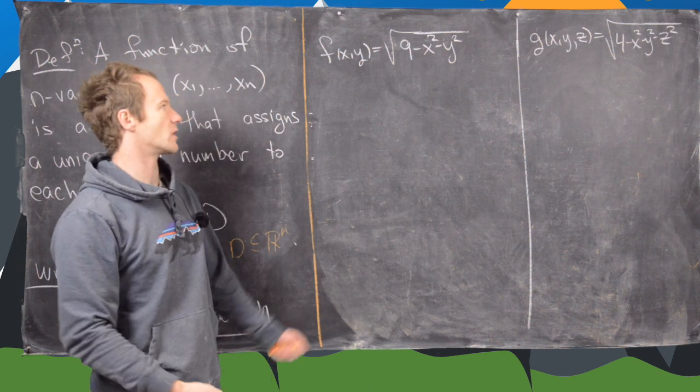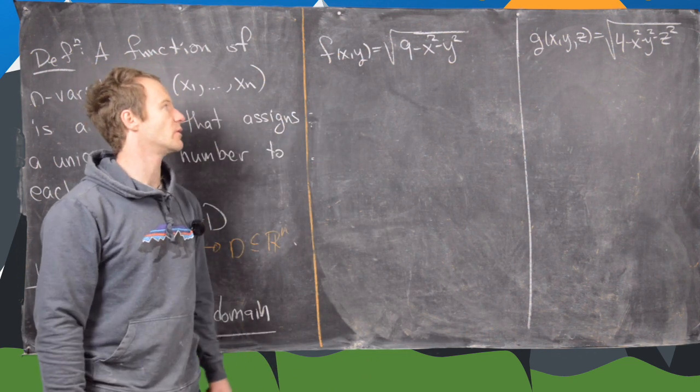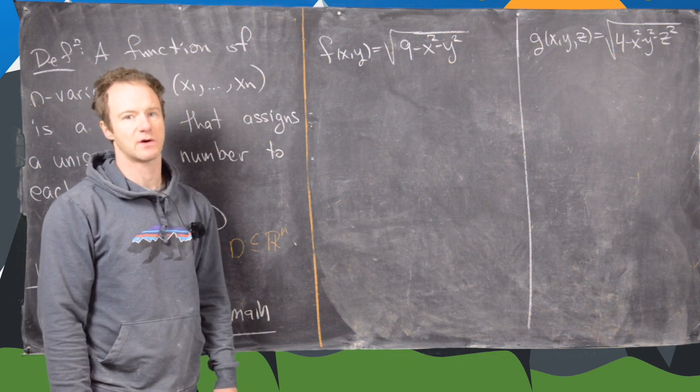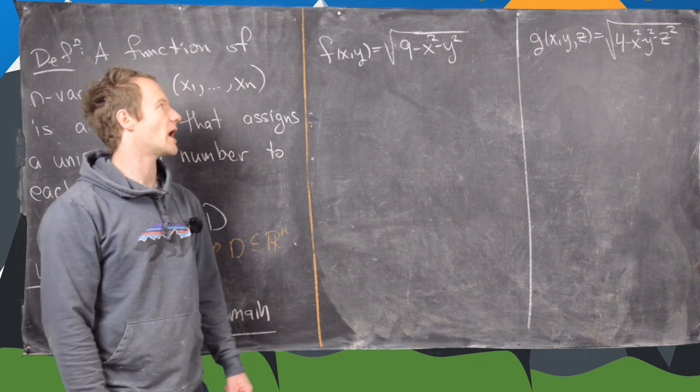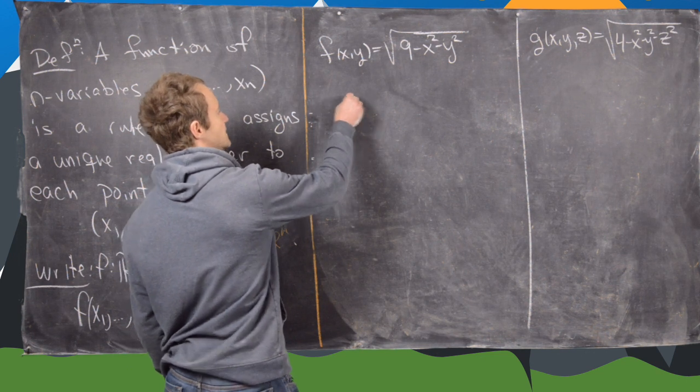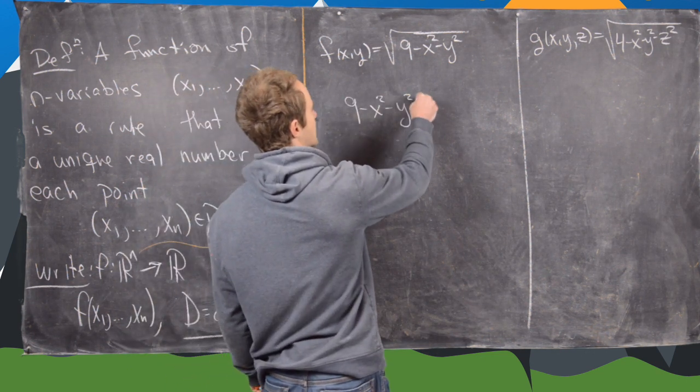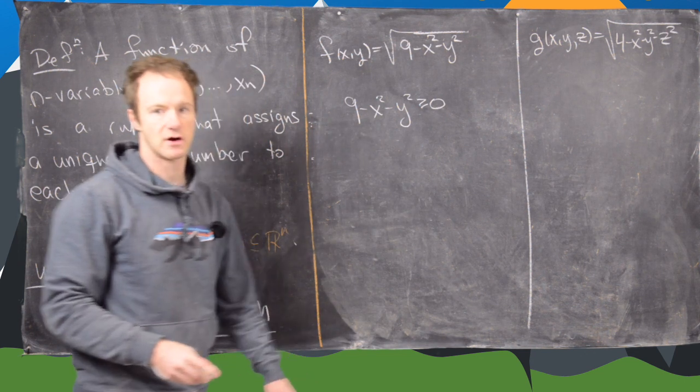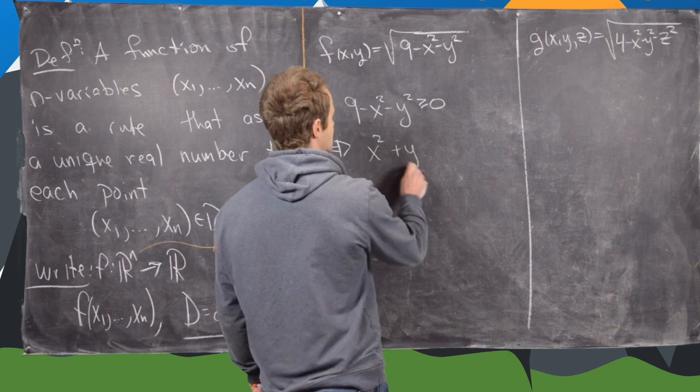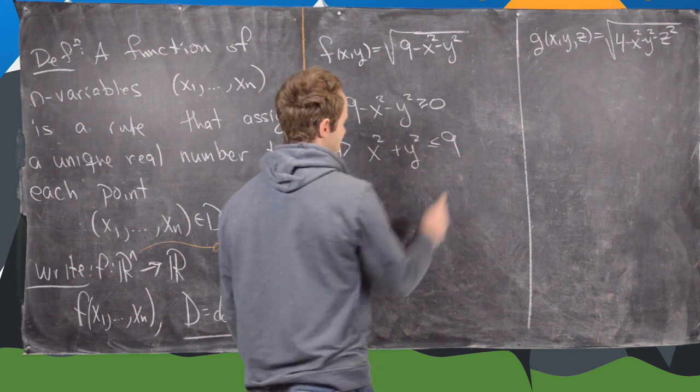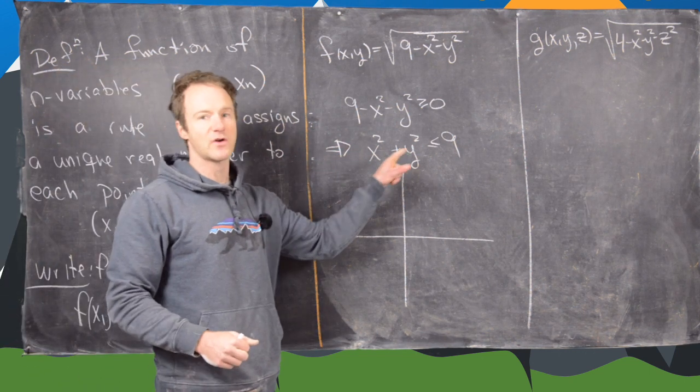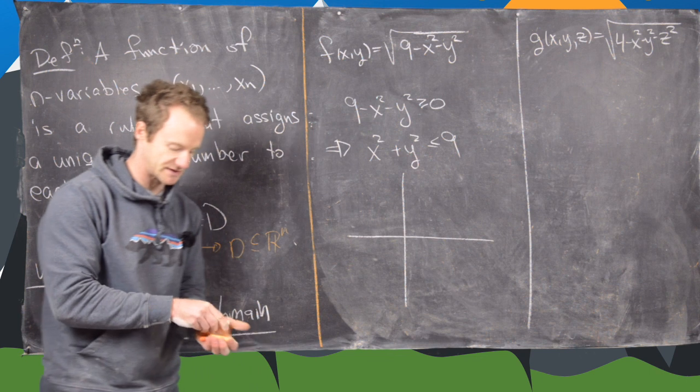I've decided to do two more examples that are related to each other. The first one will be f of xy is the square root of the quantity 9 minus x squared minus y squared. We know our rule says that everything in the radical needs to be non-negative. So that means we need 9 minus x squared minus y squared to be bigger than or equal to 0. So moving stuff around, that gives us x squared plus y squared has to be less than or equal to 9.